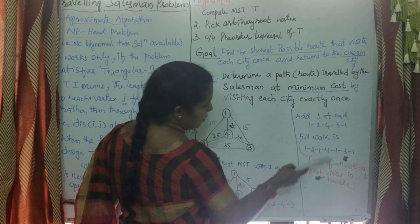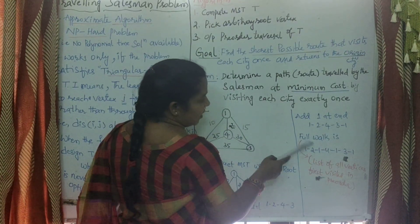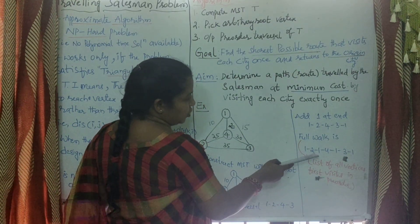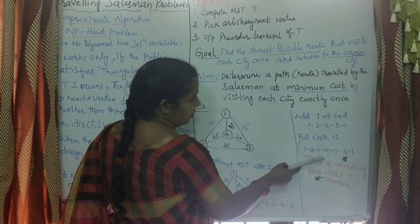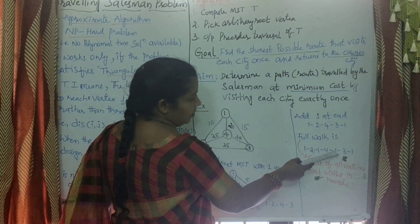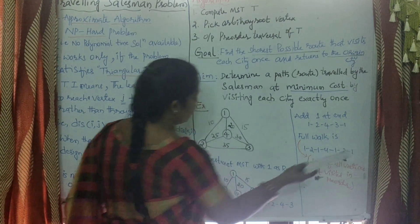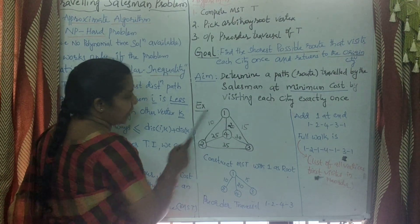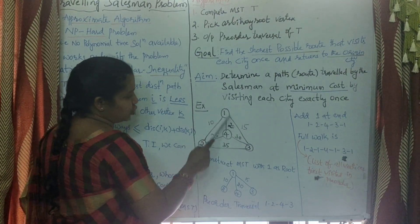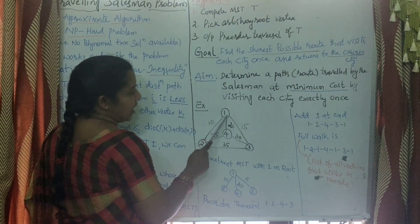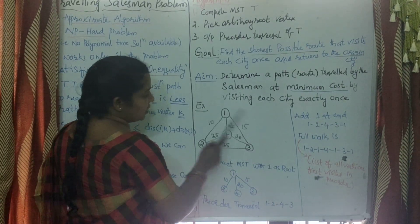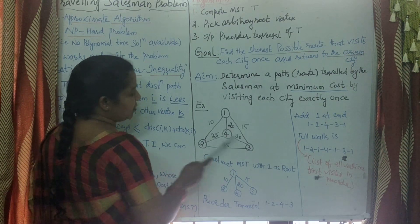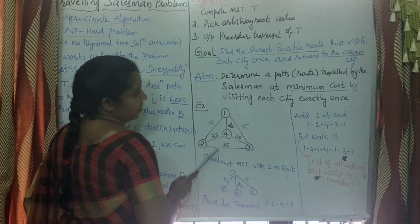The full walk lists all vertices first visited in pre-order. From 1 to 2, again we visit 1; from 1 to 4, again we visit 1; and from 1 to 3. This means the salesman travels from 1 to 2, returns back, then travels 1 to 4, returns to 1, then travels 1 to 3. All cities are visited, and each city from vertex 1 is visited only once.